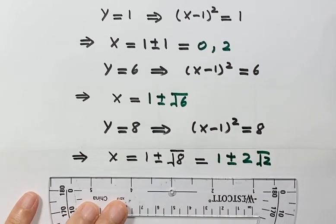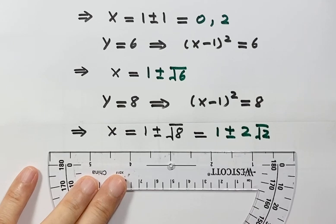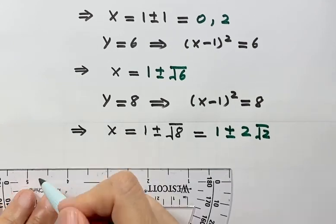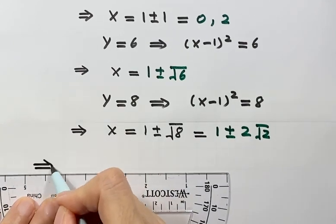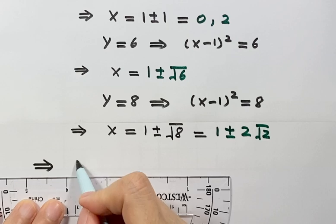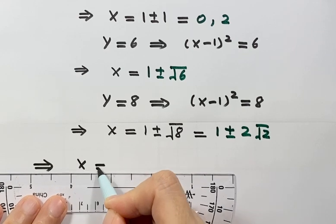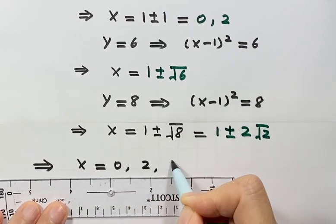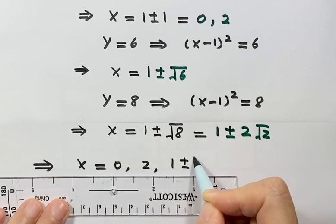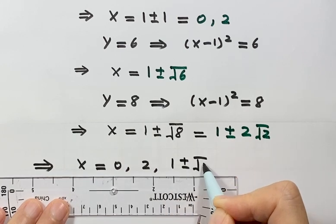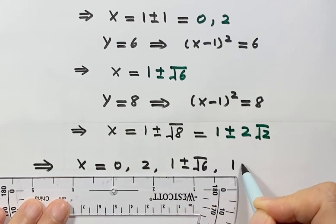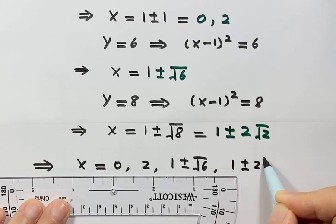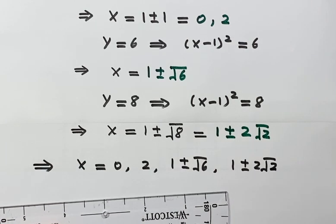Now we have the six solutions for the equation: 0, 2, 1 plus or minus square root of 6, and 1 plus or minus 2 square root of 2. Thanks for watching, see you next time.